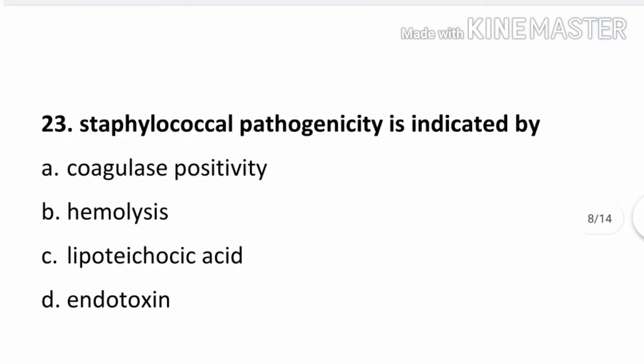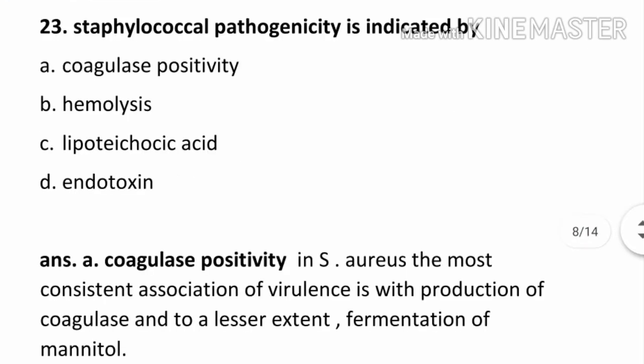Question number 23. Staphylococcal pathogenicity is indicated by: Option A. Coagulase positivity, Option B. Hemolysis, Option C. Lipoteichoic acid, Option D. Endotoxin. The correct answer is Option A. Coagulase positivity. In S. aureus, the most consistent association of virulence is with production of coagulase and to a lesser extent fermentation of mannitol.